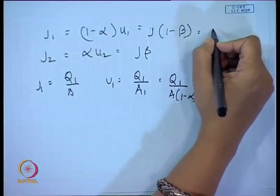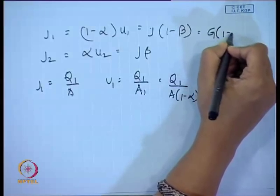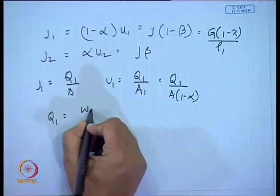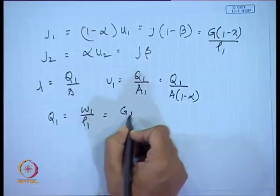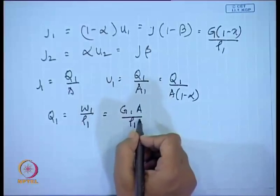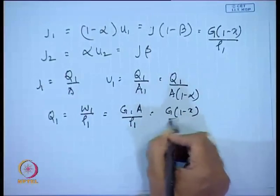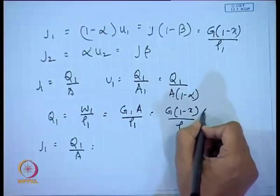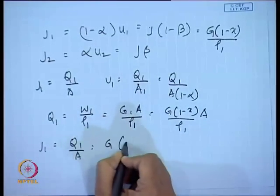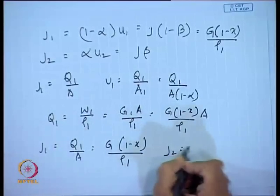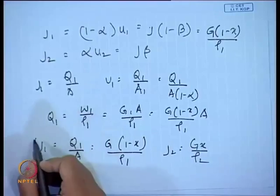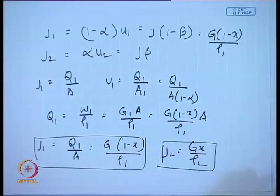We know q₁ = w₁/ρ₁ = G₁·A/ρ₁ = G(1−x)·A/ρ₁, and therefore j₁ = q₁/A = G(1−x)/ρ₁. Similarly, j₂ = G·x/ρ₂. This relationship relates the overall mass flux G and the component volumetric fluxes.